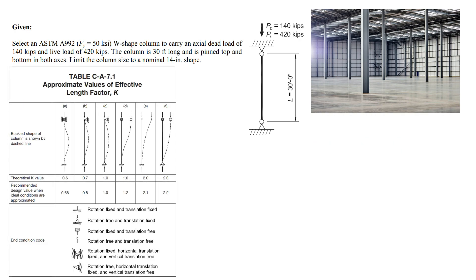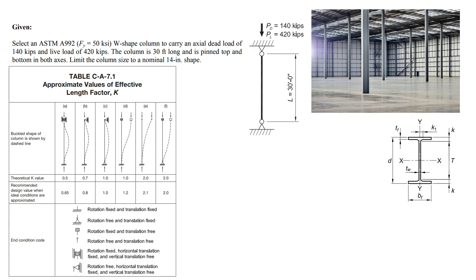Using table C-A-7.1 from the AISC specifications commentary, we determine the effective length by multiplying the length factor K by the member length L. We differentiate between the strong and weak axes of bending. Because both ends are pinned, K is taken from case Kc and equals 1, meaning the effective length for both axes is 30 feet.